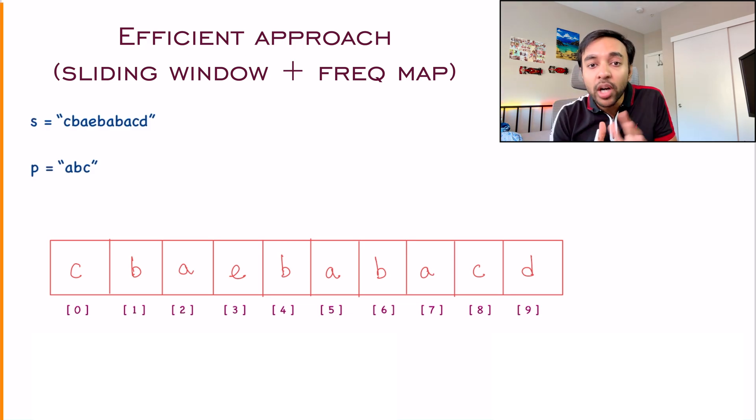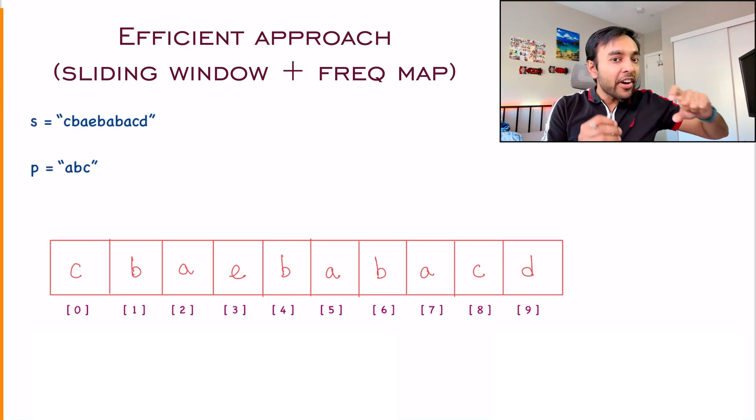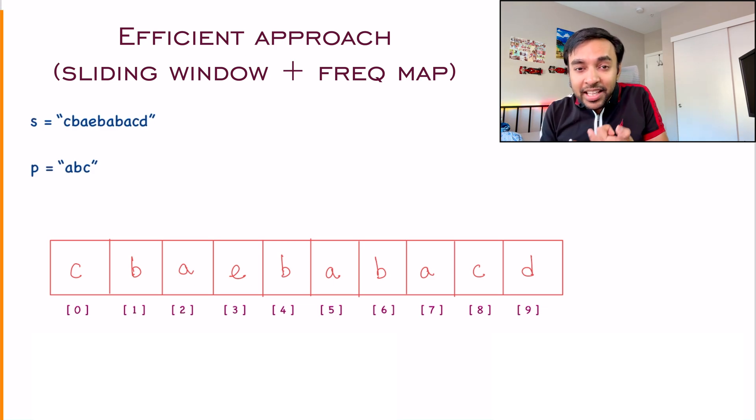If you remember, what is the property of an anagram? That all of the characters will occur the same number of times in both the strings. Correct? So if I can create a frequency array, that can help me to solve some of the things.